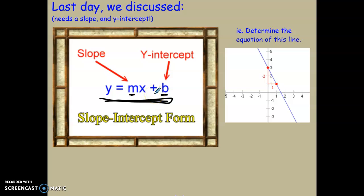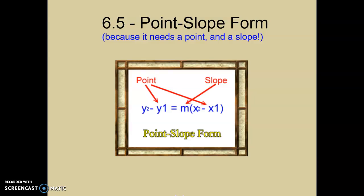Slope-intercept form is really easy when you're given a graph because you can look at the y-intercept and count your rise and your run for your slope. Now we're going to look at another form called point-slope form, because it needs a point and a slope.